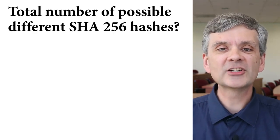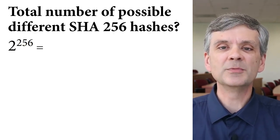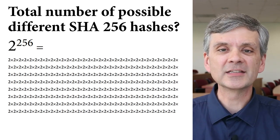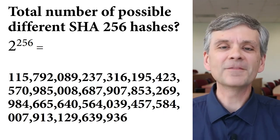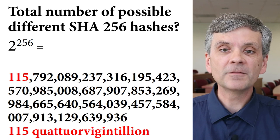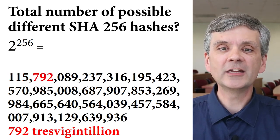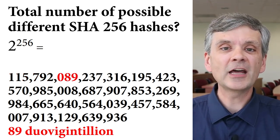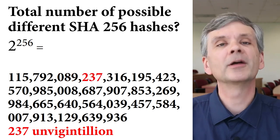How many different hashes are there? 2 to the 256th, which means 2 multiplied by itself 256 times. Or to be specific: 115 quatuor vigentillian, 792 tres vigentillian, 89 duo vigentillian, 230... you get the idea.